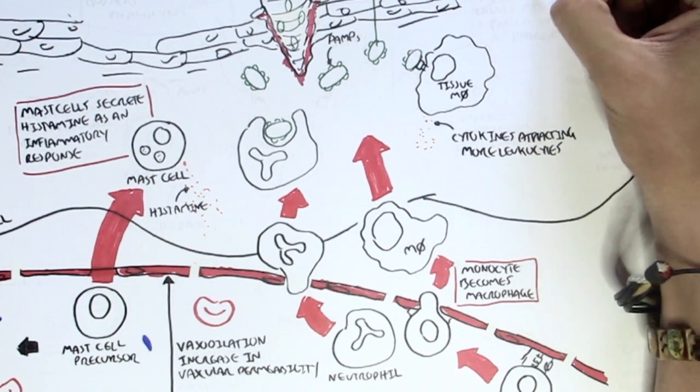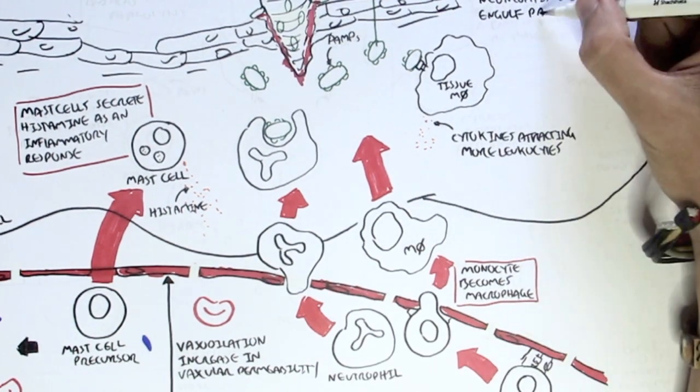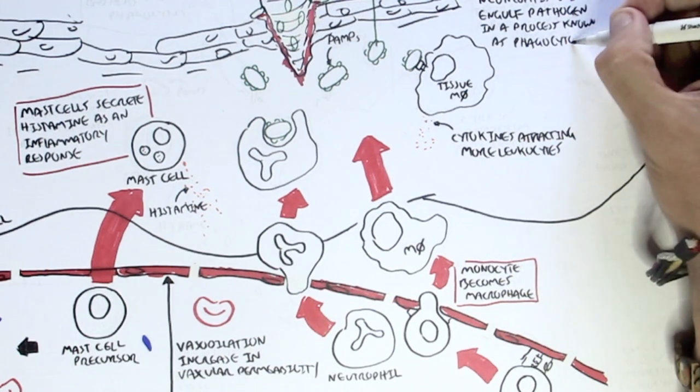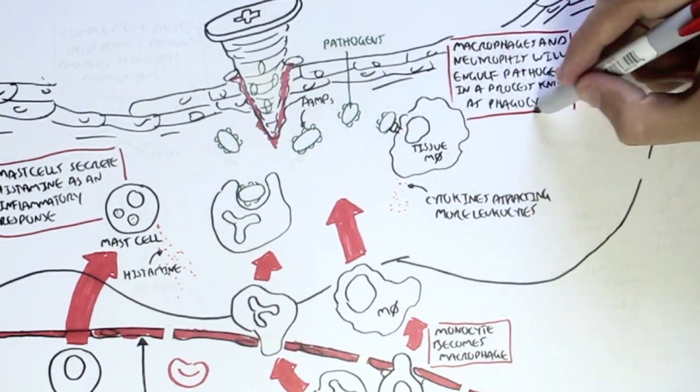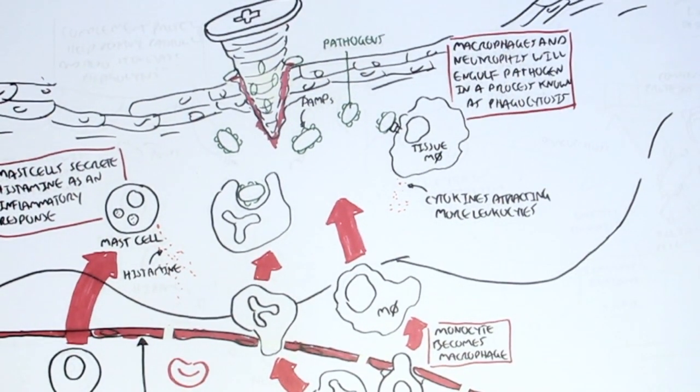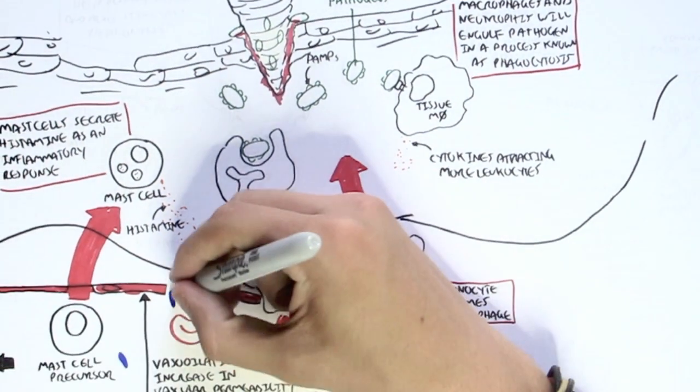So the two important cells which will initiate the innate immune response are essentially the macrophages, as well as the neutrophils. And the macrophages and neutrophils will engulf the pathogens in a process known as phagocytosis.